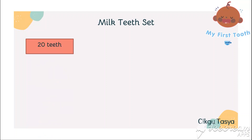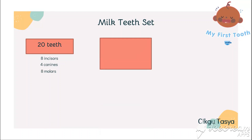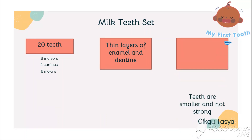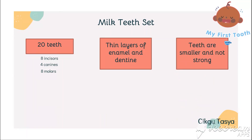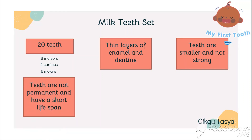The milk teeth set has 20 teeth: eight incisors, four canines, and eight molars. Milk teeth have a thin layer of enamel and dentine. The teeth are smaller and not strong, and they are not permanent — they have a short lifespan, meaning we won't be using them for a long time.